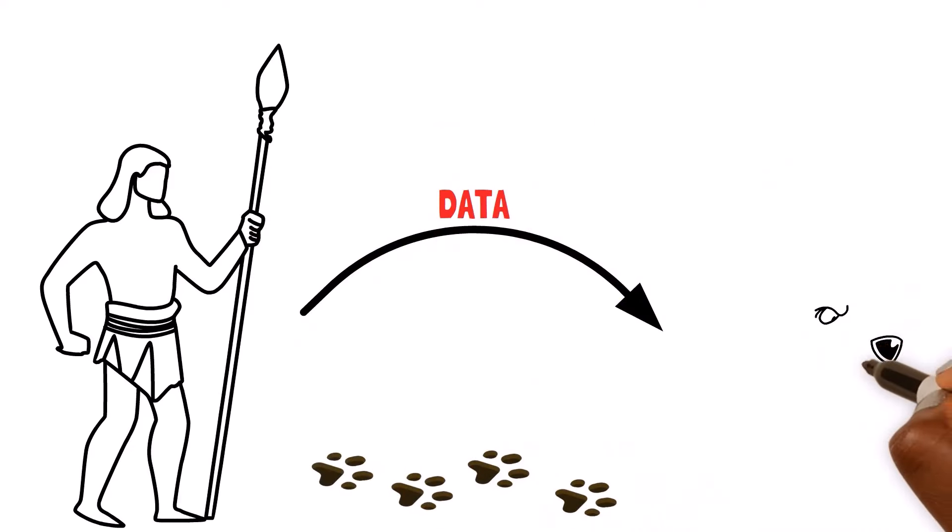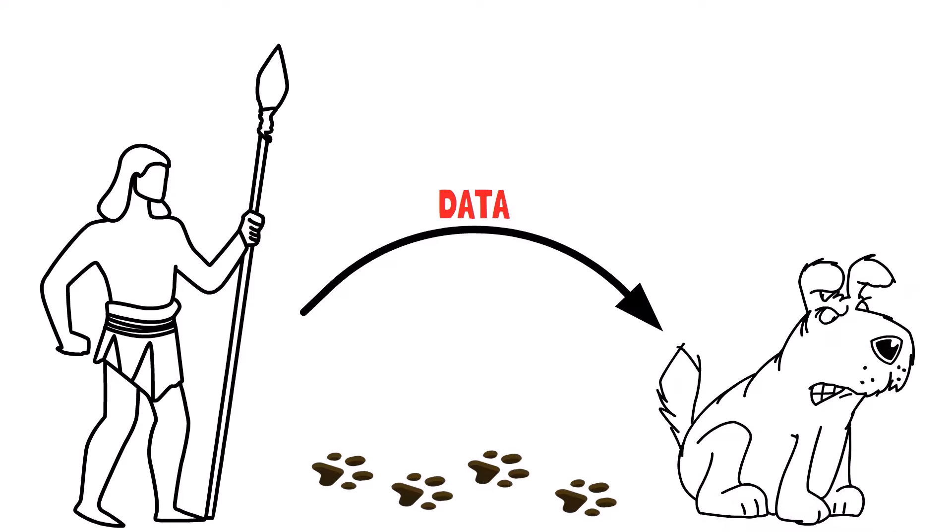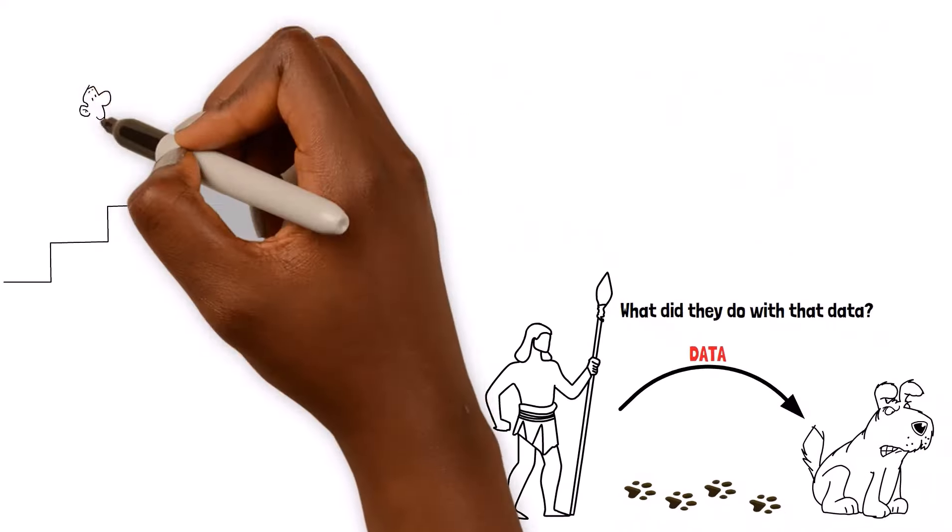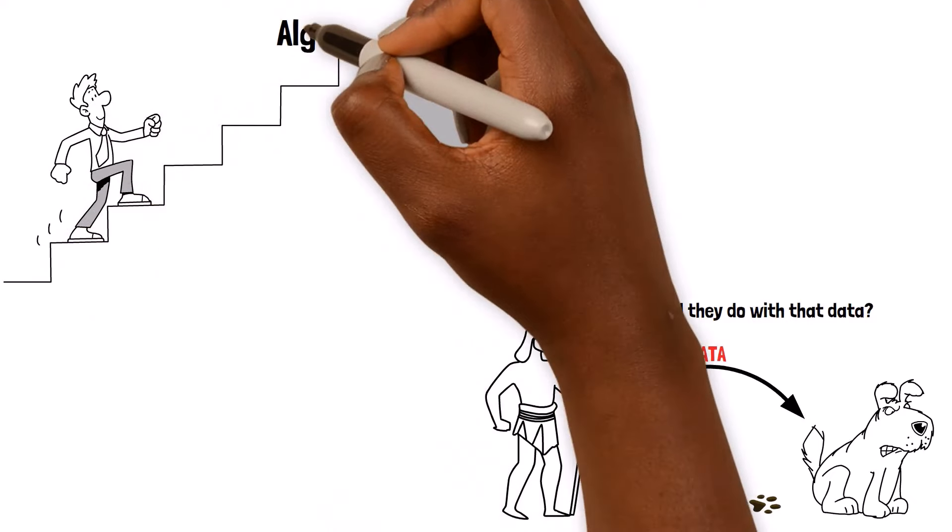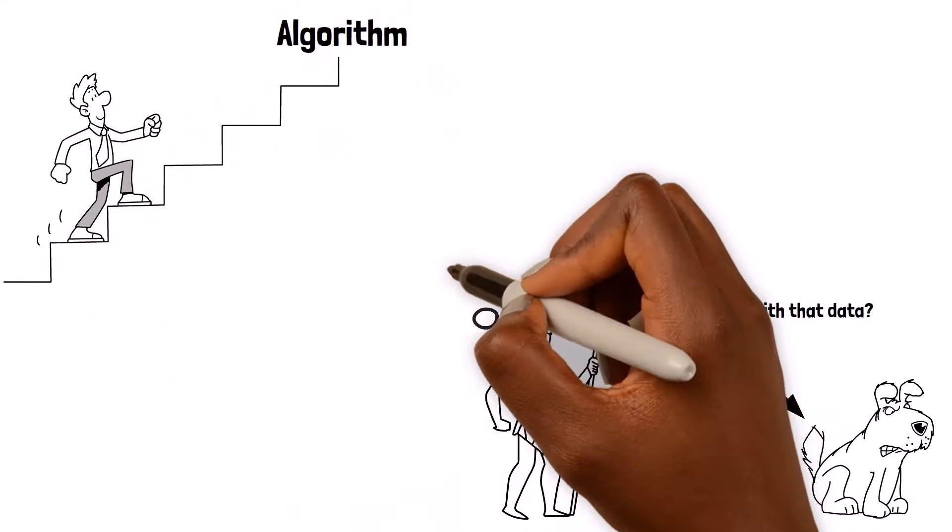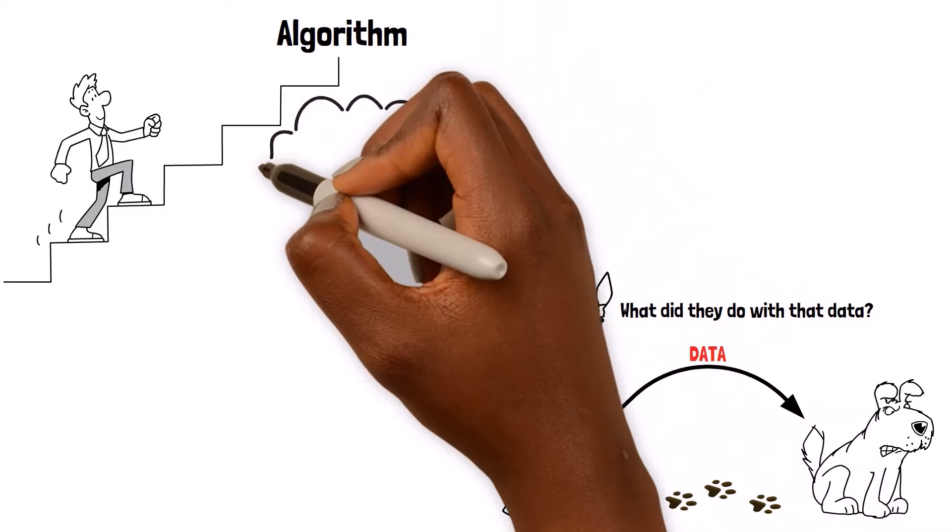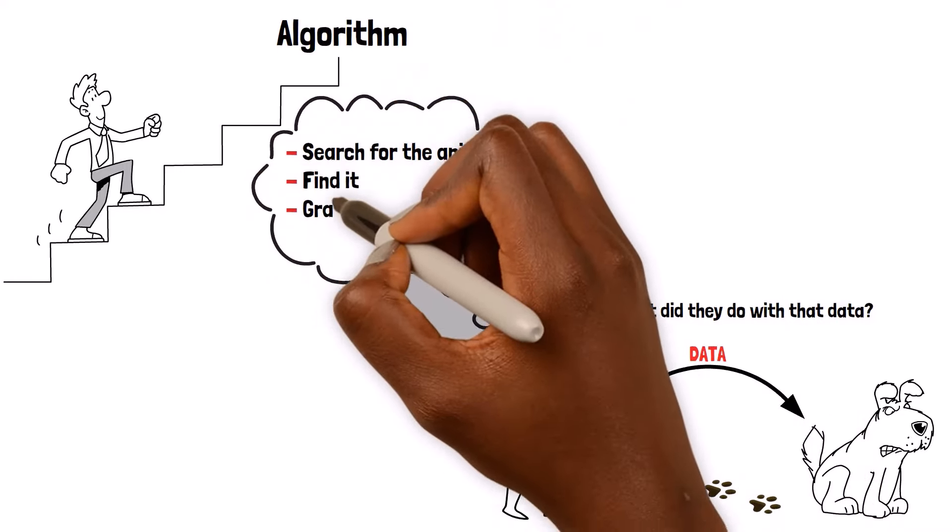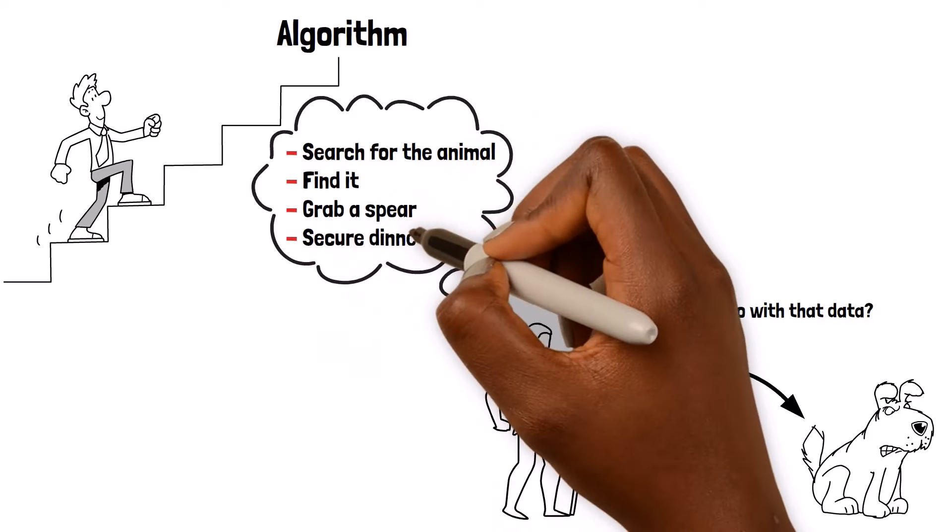that's data telling them that an animal had been there. So what did they do with that data? They followed a set of steps, an algorithm. In the hunter's mind, the algorithm was simple: search for the animal, find it, grab a spear and secure dinner.